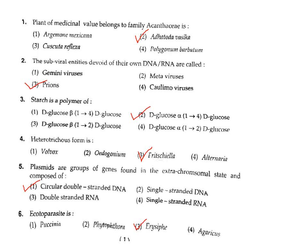Question 3: Starch is a polymer of what? Starch is a polymer of glucose, in which glucose units are joined together by alpha-1,4 glycosidic bonds. The correct answer is Option 2.